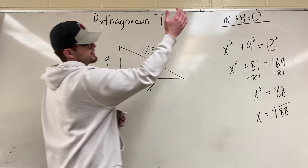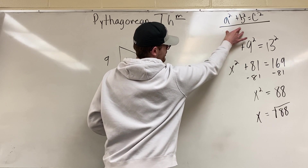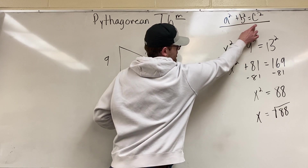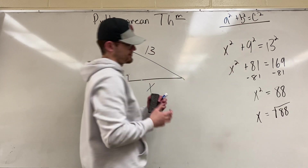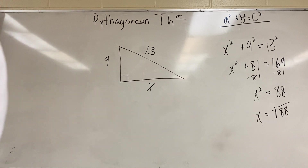That's the quick Pythagorean theorem. Remember: we have our legs and the hypotenuse. The legs squared added together equal the hypotenuse squared, and you should be able to solve for any unknown side.